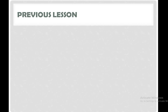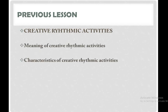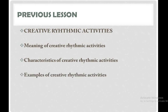Welcome to another enticing lesson. In our previous lesson, we looked at creative rhythmic activities, which are activities made by animals, objects, and machines in our surroundings, following regular patterns. We also looked at some of the characteristics of creative rhythmic activities, and lastly, we looked at examples of creative rhythmic activities.